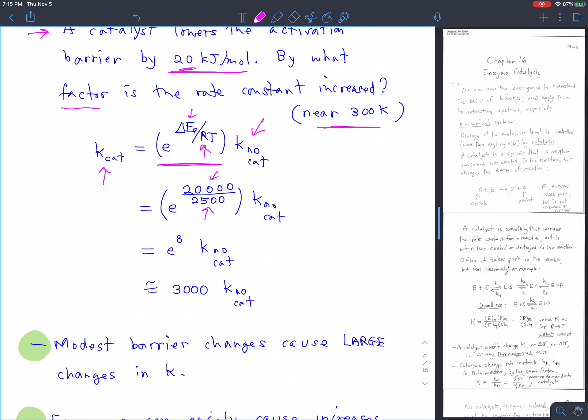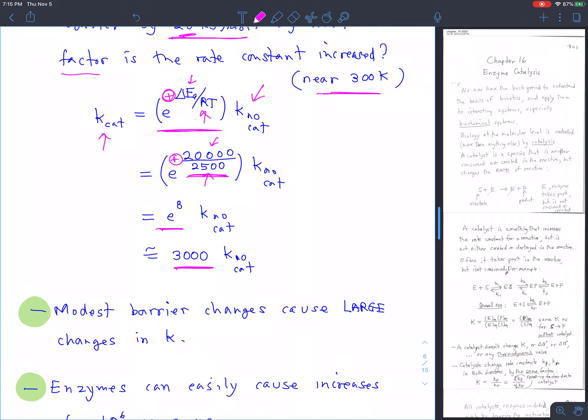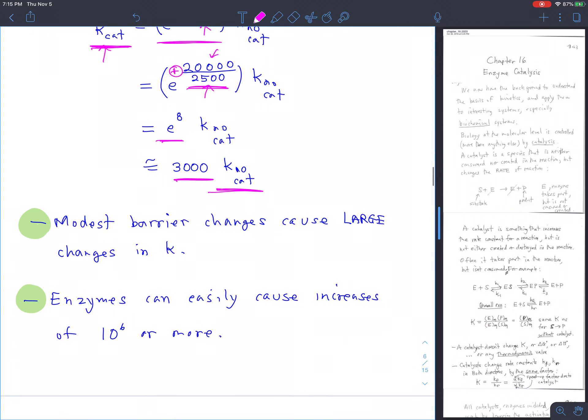Notice that there's no minus sign. It's a plus sign here. So we get, this is eight. 20,000 divided by 2500 is eight. We have e to the eighth. E to the eighth is around 3000. And that means that the catalyzed rate constant is 3000 times faster than the uncatalyzed rate constant.